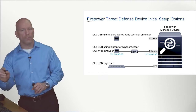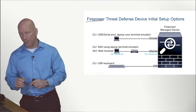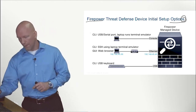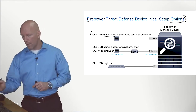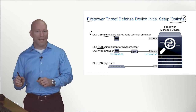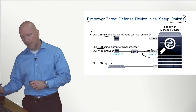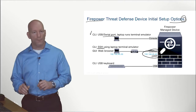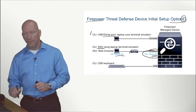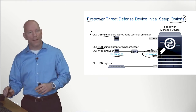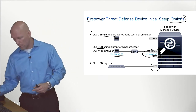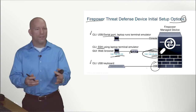Before we move on, we have to deploy the physical security appliance — in this example the Firepower Threat Defense appliance. There are multiple configuration setup options. You can use the good old-fashioned CLI on a serial port, connect via SSH since the appliance already comes with a default IP of 192.168.45.45, or physically connect via USB keyboard and monitor.